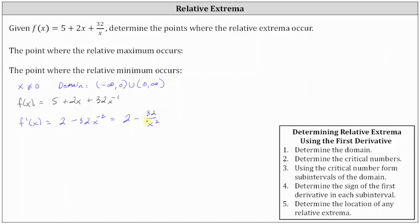Now we set the derivative equal to zero and solve for x to determine any critical numbers. This gives us the equation 2 minus 32 divided by x squared equals zero. To clear the fraction, we multiply both sides by x squared, giving us 2x squared minus 32 equals zero.